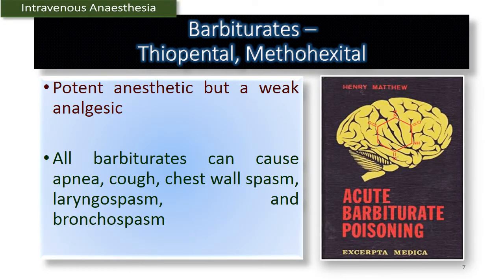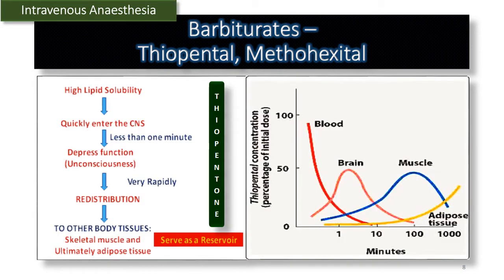All barbiturates are fast inducers — thiopental sodium and methohexital. They are potent anesthetic agents but weak analgesics. All barbiturates can cause acute toxicity manifesting as apnea, cough, chest wall spasm, laryngospasm, and bronchospasm. All barbiturates are highly lipid-soluble, which allows them to quickly enter the CNS in less than one minute and produce unconsciousness. They then very rapidly redistribute to other parts of the body such as skeletal muscle and ultimately adipose tissue, which acts as a reservoir.